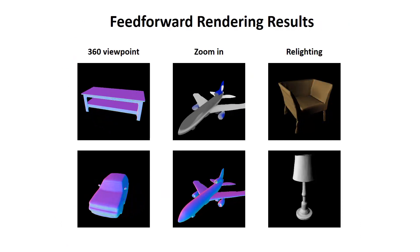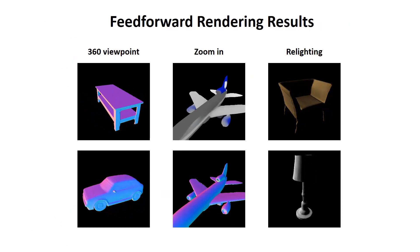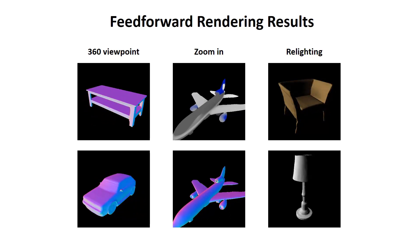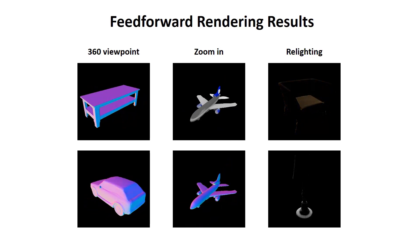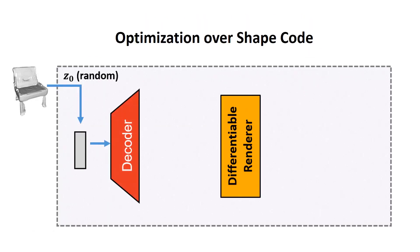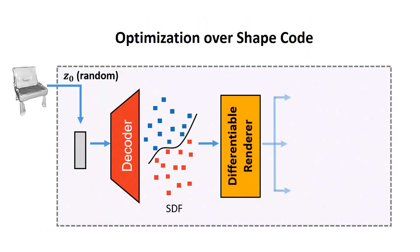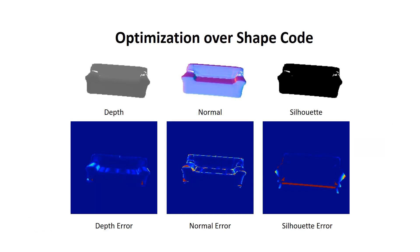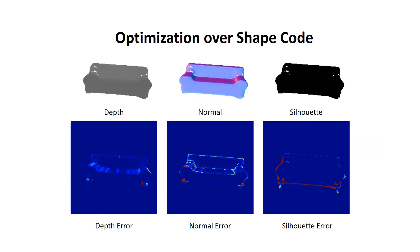We therefore propose such a renderer to bridge the gap between inverse graphics methods and this new representation. Our renderer is fully differentiable such that you can define customized losses over 2D observations. During optimization, the losses gradually decrease while the shapes match the observations.